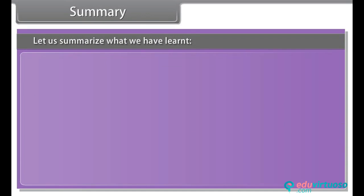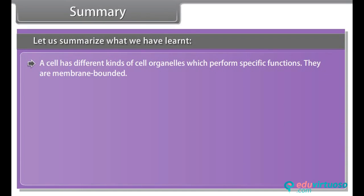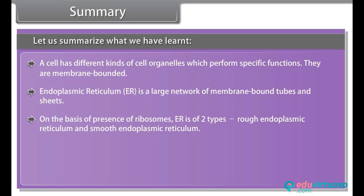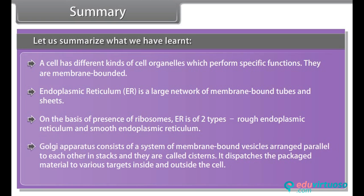Let us summarize what we have learned. A cell has different kinds of cell organelles which perform specific functions — they are membrane-bounded. Endoplasmic reticulum is a large network of membrane-bound tubes and sheets. On the basis of presence of ribosomes, ER is of two types: rough endoplasmic reticulum and smooth endoplasmic reticulum. Golgi apparatus consists of membrane-bound vesicles arranged parallel to each other in stacks called cisterns, and it dispatches packaged material to various targets inside and outside the cell.